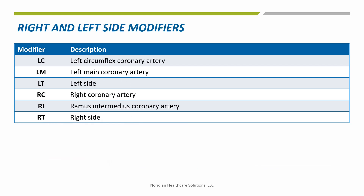When only one side of the body or body part is associated with the service being performed and the service is not bilateral, providers can use a right or left modifier on the code. This slide includes a list of right versus left side modifiers. These modifiers should not be used if the HCPCS code already indicates right or left, or if the code is a bilateral procedure.